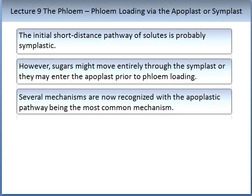In lectures 2 and 3, when we were looking at root and water and nutrient movements into the root, we learned about apoplastic and symplastic routes. The initial short distance pathway of solutes is probably symplastic in the phloem. However, sugars might move entirely through the symplast, or they may enter the apoplast prior to phloem loading. There is some speculation about the exact mechanism. Several mechanisms are now recognized with the apoplastic pathway, and it is assumed that this is the most common mechanism.